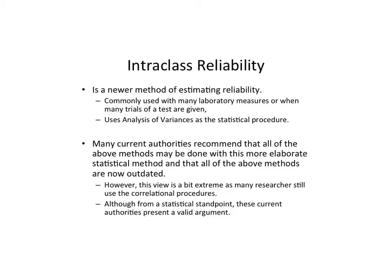The purpose of this video is to cover a newer type of method for estimating reliability. It's not a method in and of itself, but a different statistical procedure that can be used in place of correlation when doing the different forms of reliability covered in class. This uses what's called analysis of variance, and many current researchers suggest that the traditional correlation-based methods are outdated and should be replaced with intraclass reliability.